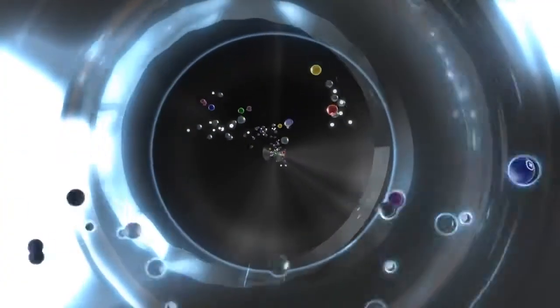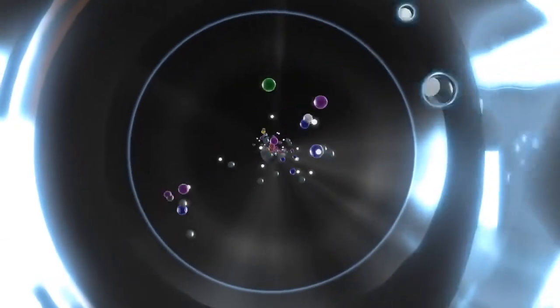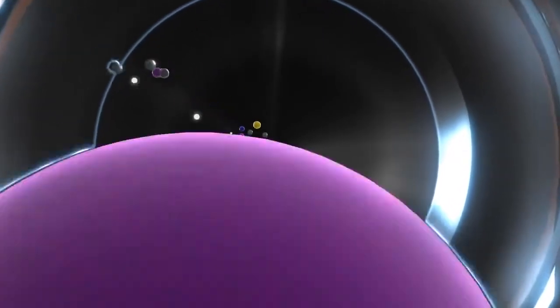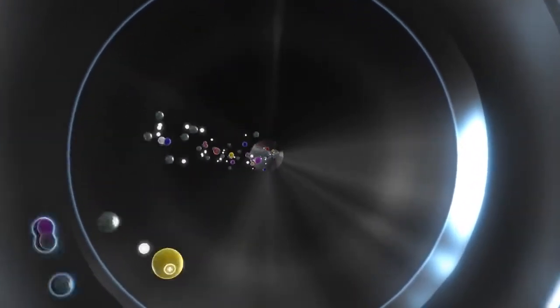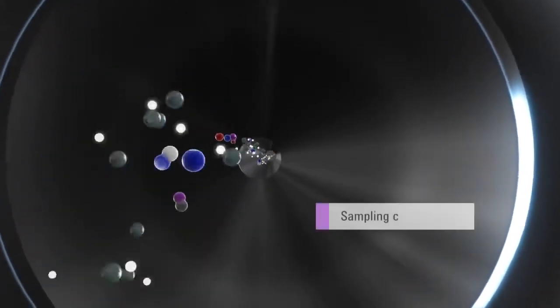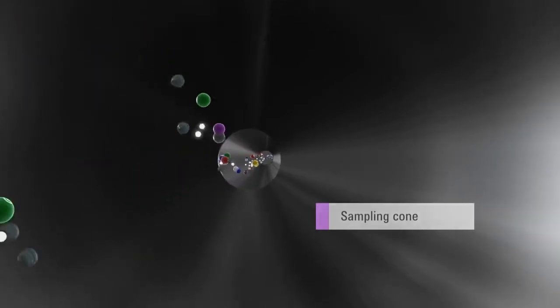The ions generated in the plasma are extracted into the high vacuum region through the two interface cones. The unique design of the 7700 interface combines exceptional matrix tolerance and high sensitivity across the mass range. The interface cones are O-ring free and both are held in place using thread mounts, so no screws need to be removed for routine maintenance.